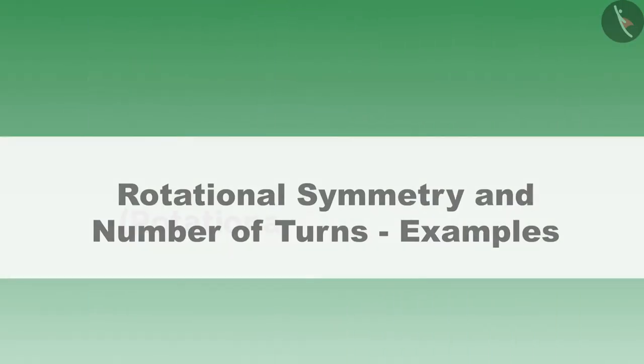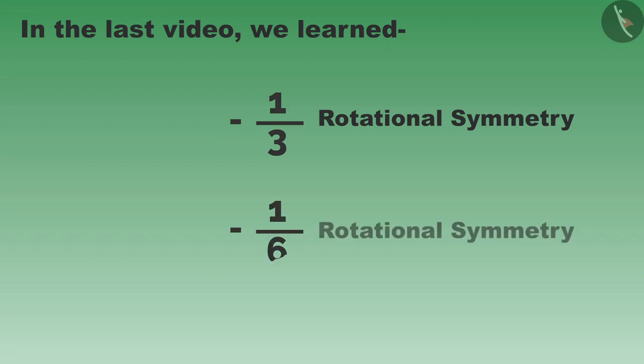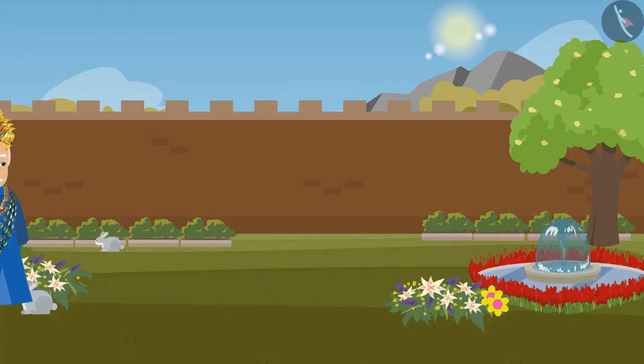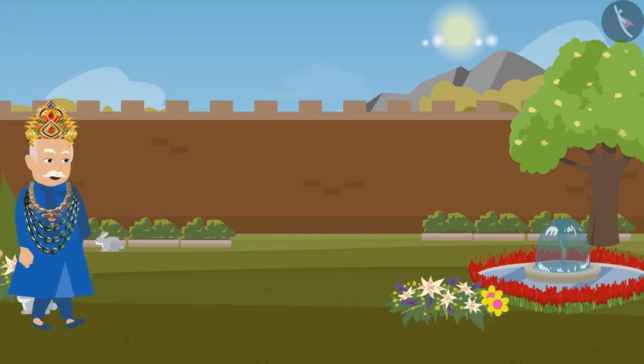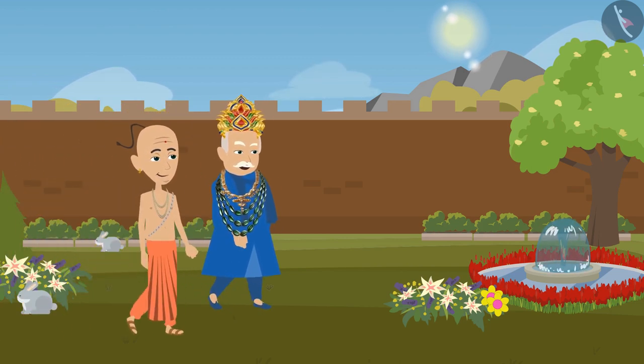Friends, welcome to this video. In the last video we learned about one-third and one-sixth rotational symmetry. Today we will see some examples related to them. King Krishnadeva Rai and Tenali Rama were taking a walk in the garden.